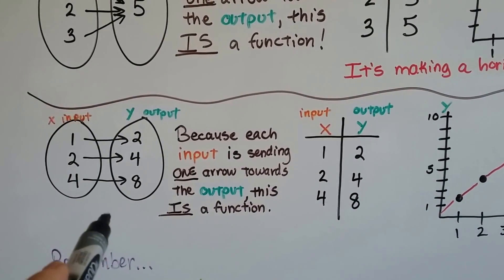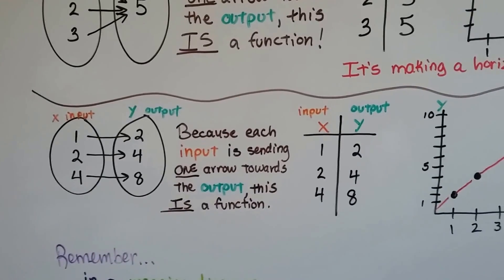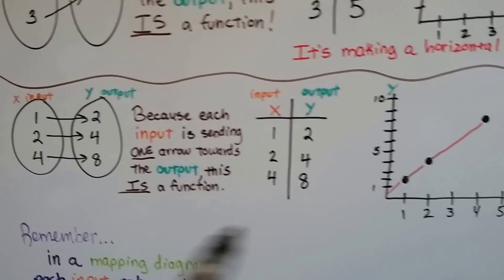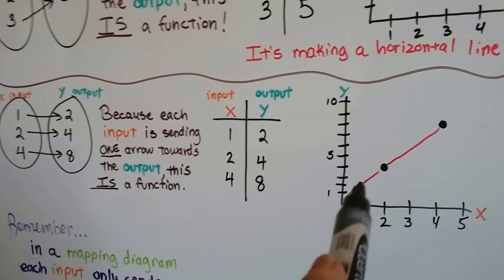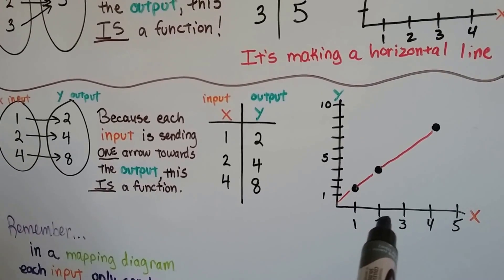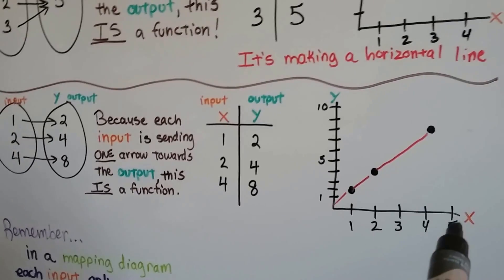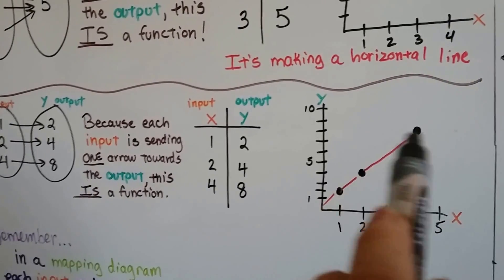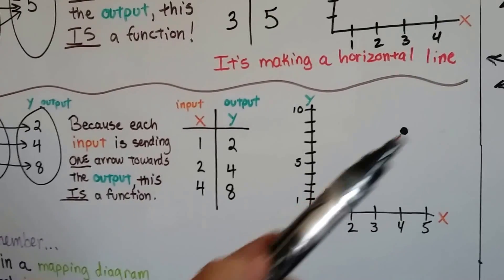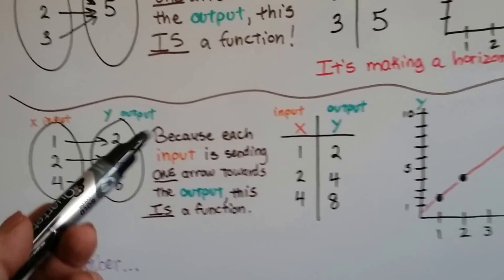And if we graphed it, our coordinates would be a 1, 2 right here and a 2, 4 and a 4, 8. See? And we'd be making this line with this slope. See? That is a function.